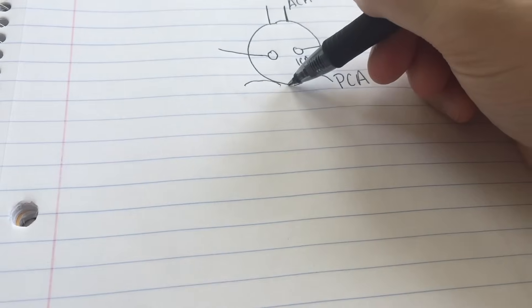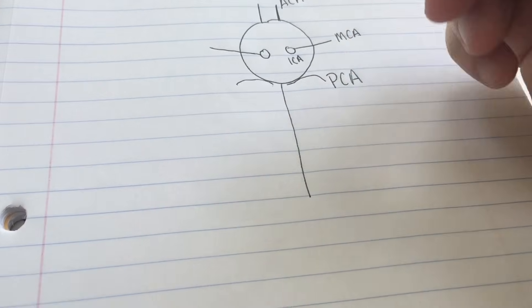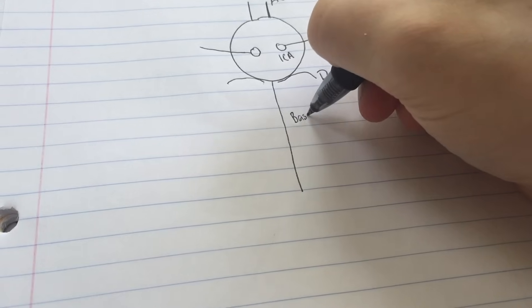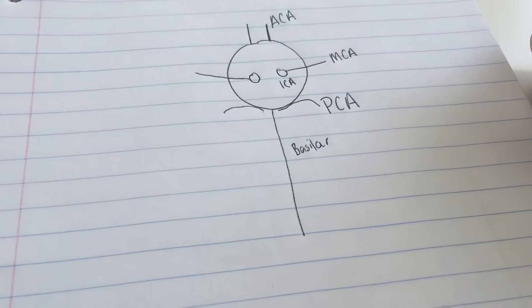Now the stick figure needs a body. So we draw the body all the way down. This body is the basilar artery because it's the base of our stick figure.